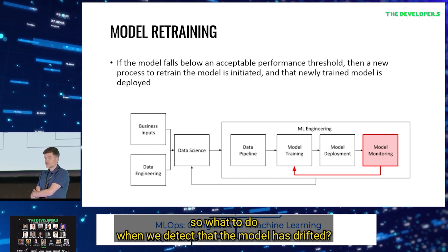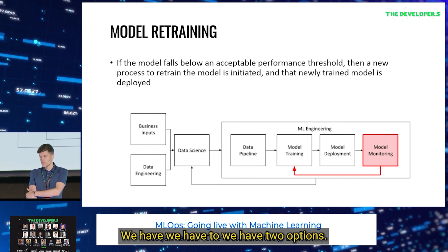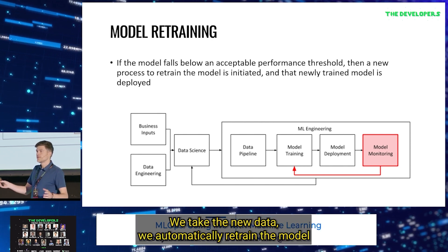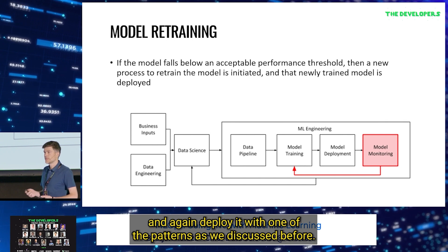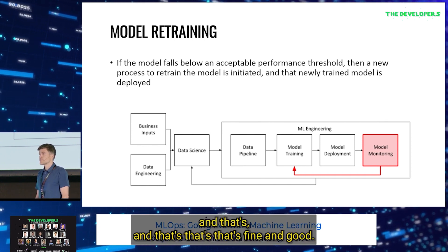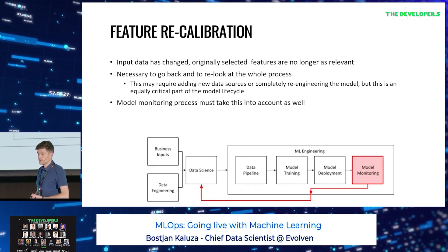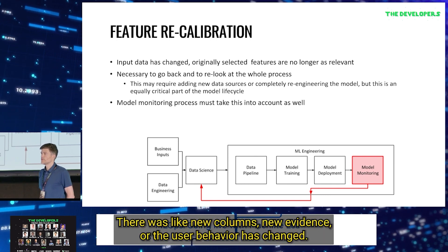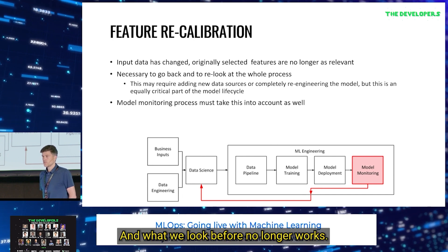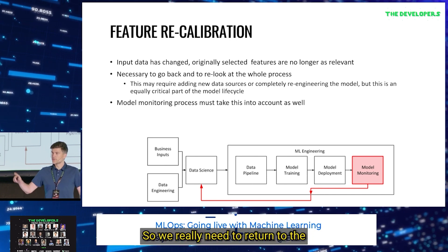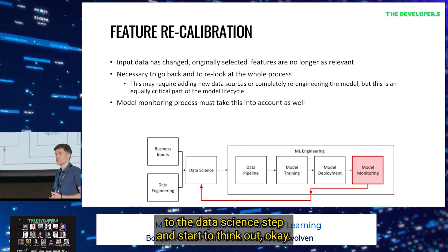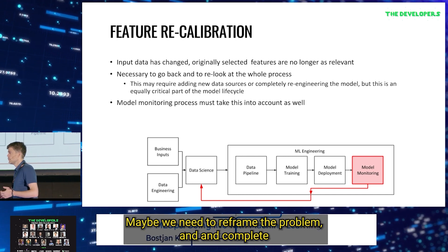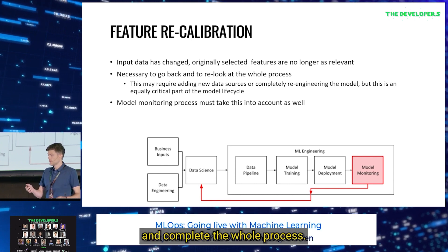What do we do when we detect that the model has drifted? We have two options. One: we detected that something is off, so we return to the retraining stage, take new data, automatically retrain the model, and deploy it again. But sometimes the input data has changed significantly — new columns, new evidence, or user behavior has changed and what worked before no longer works. In that case, we really need to return to the data science step and figure out what new features we can use, possibly collect new data, reframe the problem, and complete the whole process.